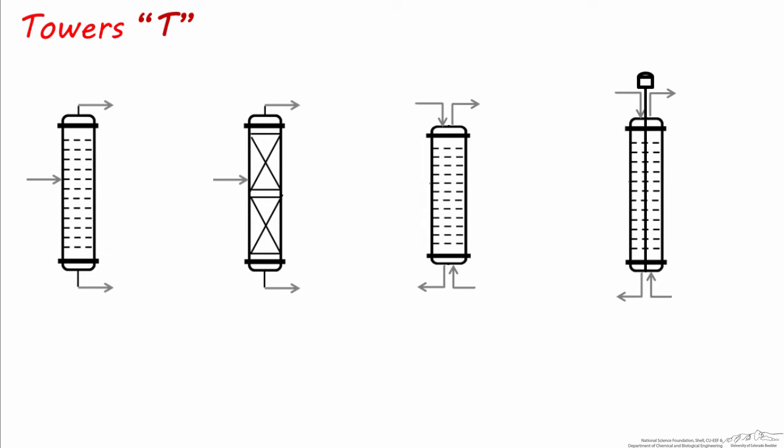This first symbol is a simple tray column and is one you might commonly see in many chemical processes. The dashed lines represent trays, but you might see symbols with solid lines as well. This second symbol features large X's in two sections of the column, which means it has packing which was dropped in from the top and is most likely supported on mesh-like trays. Packed columns can be used for all the processes I've mentioned.